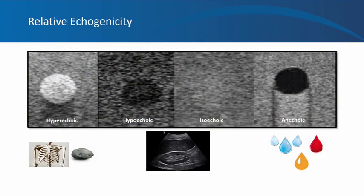Let's start with a brief refresher about terminology and renal anatomy. We describe grayscale ultrasound findings in terms of relative echogenicity — how echogenic a particular structure is compared to its surroundings. The more echogenic a structure is, the brighter it appears on the monitor. In this picture, the circular area in the middle is hyperechoic because it's brighter than the surrounding area. In other words, this structure is making more echoes compared to its surroundings.